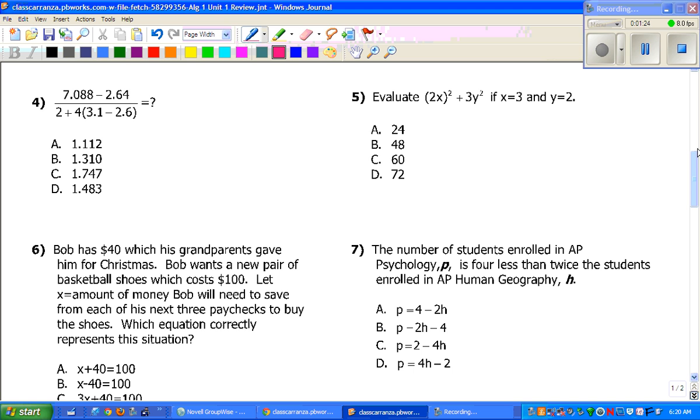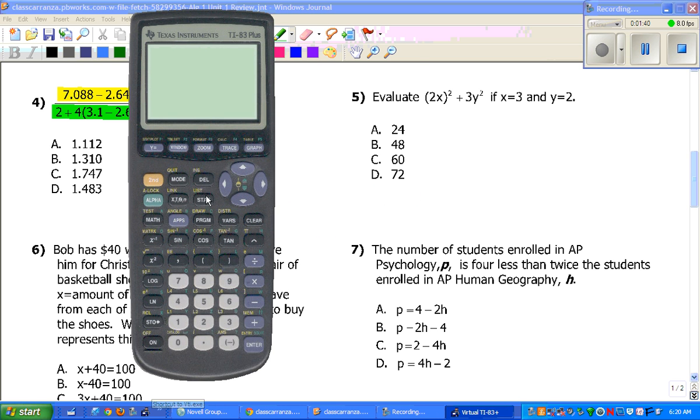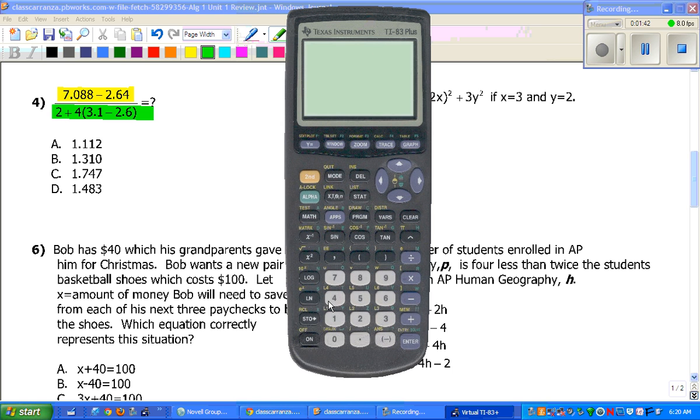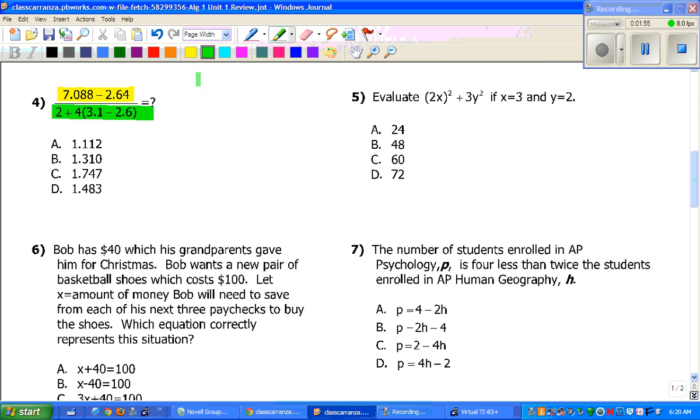Let's look at problem 4. 7.088 minus 2.64 over 2 plus 4 times parentheses 3.1 minus 2.6. Remember, we're going to treat this like we have two separate problems, the top half and the bottom half. Since we're working with decimals, I want to double check that I'm doing everything right, so I'm getting out my calculator. We're going to do the top first. It's 7.088 minus 2.64, and that gives us 4.448.